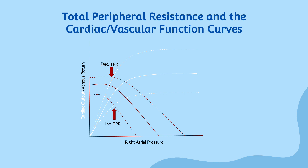Lastly, changes in total peripheral resistance also affect the cardiac function and vascular function curves simultaneously. An increase in total peripheral resistance results in a shift of the curves downward, while a decrease in total peripheral resistance results in a shift of the curves upward. This makes sense as a decrease in resistance means it is easier for the heart to pump blood, which is an increase in cardiac output, and that it is easier for the blood to flow, which is an increase in venous return. Of course, the opposite is true: increased total peripheral resistance will decrease the cardiac output as well as the venous return.